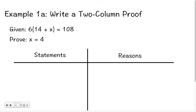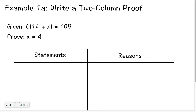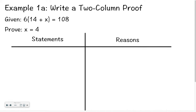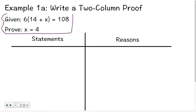Let's start out with something familiar, which would be solving problems. We're going to use something familiar to learn something new: how to write a two-column proof. The way that you do that is you start a problem with something called a given and then a proof statement.